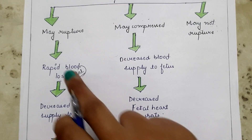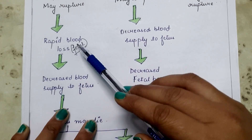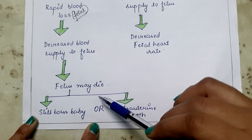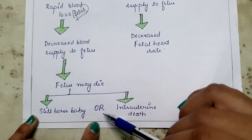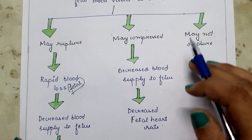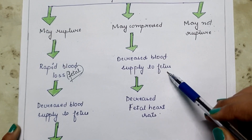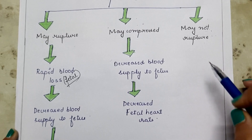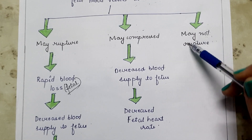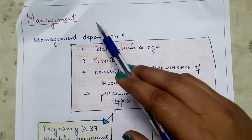There are three possibilities: if the fetal blood vessels rupture, there is rapid fetal blood loss and the fetus may be stillborn or intrauterine death may occur. If the fetal blood vessels are compressed, there is decreased blood supply causing fetal bradycardia. The third possibility is that the fetal blood vessels may not rupture or may not be affected at all.